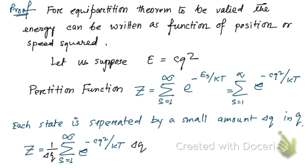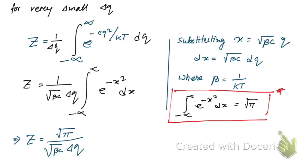If Δq is very small, this summation can be expressed in terms of an integral. For very small Δq we can write it this way. Now we have done substitution: x = √(βcq). Doing this substitution, we have got this function in this form.